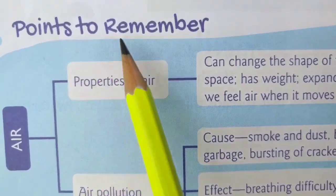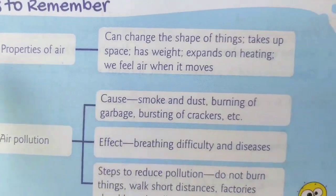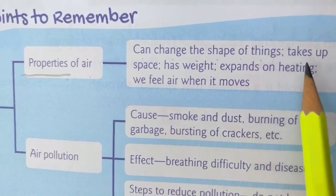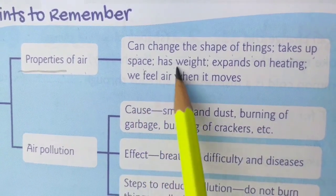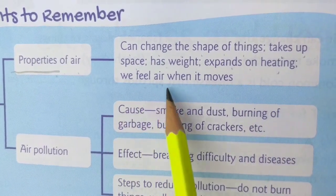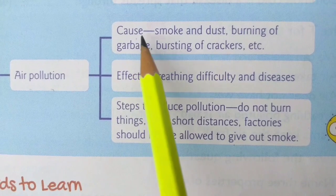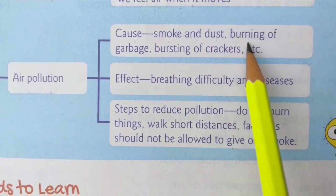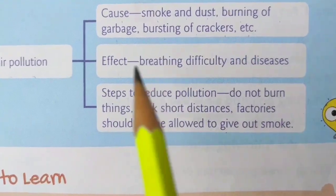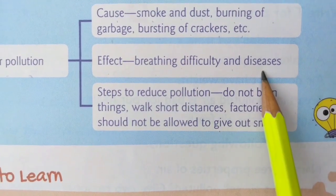Points to remember — Air. Properties of air: can change the shape of things, takes up space, has weight, expands on heating. We feel air when it moves. Air pollution: Cause — smoke and dust, burning of garbage, bursting of crackers, etc. Air pollution effect — breathing difficulty and diseases.